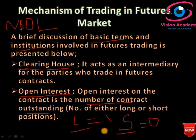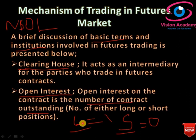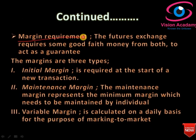If someone takes an opposite short position, open interest is zero because one contract was opened and then closed — when buy and sell are equal, open interest is zero. When a buy takes place without a matching sell, there is open interest; only when both buy and sell have taken place does open interest return to zero.